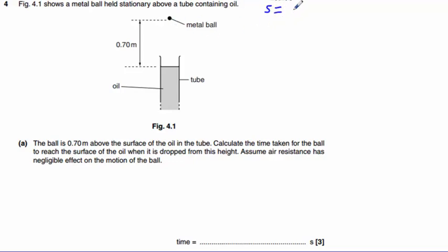So S here, the displacement, is 0.70 metres. Our initial velocity, the ball is held stationary, is 0. Our final velocity we don't know about and we don't care about, so let's ignore that. Our acceleration here is 9.81 metres per second squared.